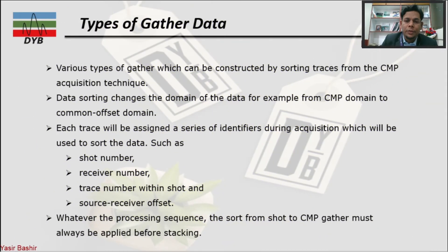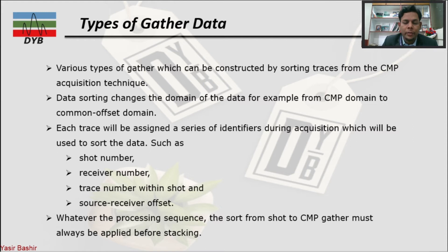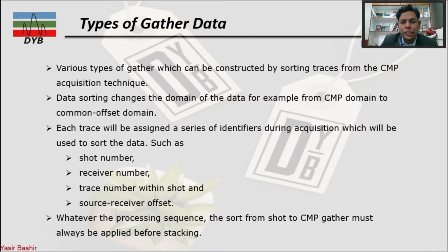Various types of gathers can be constructed by sorting traces from CMP acquisition techniques. Data sorting changes the domain of the data — for example, from CMP domain to offset domain. It is applicable to convert shot gather to CMP or the other way around. Each trace is assigned a series of identifiers: a shot record number, receiver number, offset number, trace number, and source-receiver offset. Whatever the processing sequence, the sort of the shot or CMP gather must always be applied before stacking.